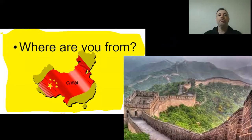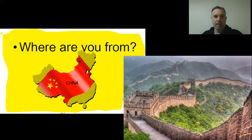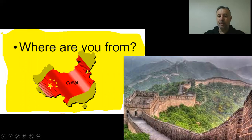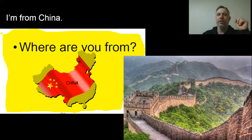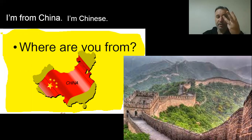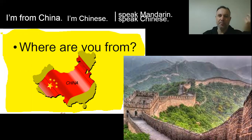The question is: 'Where are you from?' You see the country — China. You answer: 'I'm from China.' Second question: 'What's your nationality?' You say: 'I'm Chinese.' Third question: 'What language do you speak?' You say: 'I speak Chinese' or 'I speak Mandarin.' Very simple. Let's try: 'Where are you from? — I'm from China. What is your nationality? — I'm Chinese. What languages do you speak? — I speak Chinese or I speak Mandarin.'